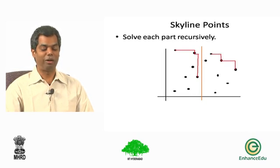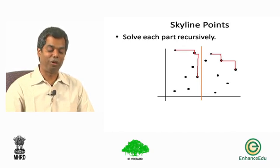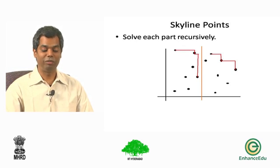As usual with divide and conquer, we will simply imagine that we solve each part recursively. So we get two skylines as shown in the picture, one corresponding to the left set of points and one corresponding to the right set of points.